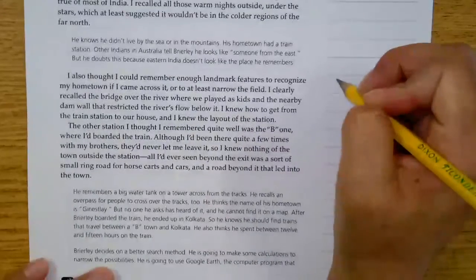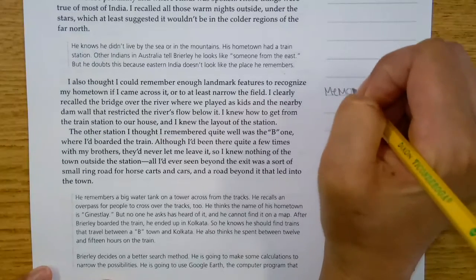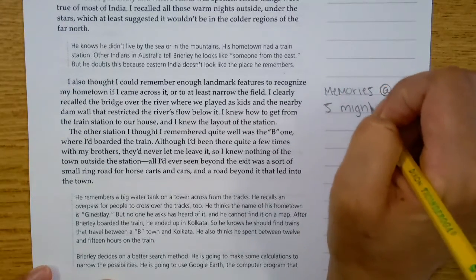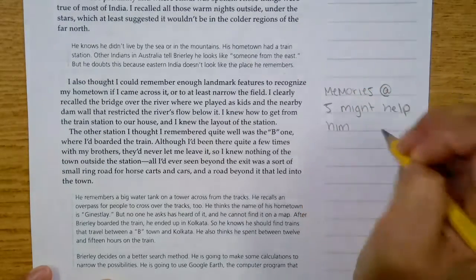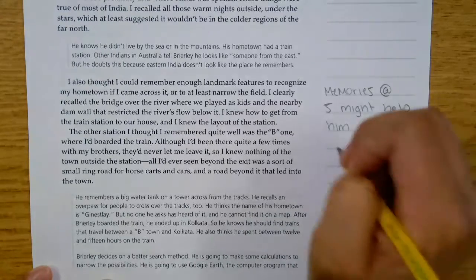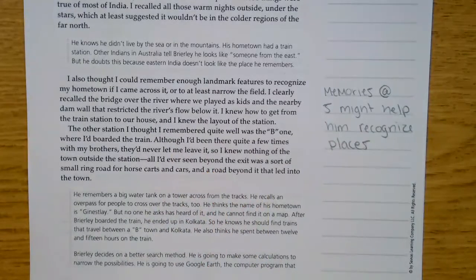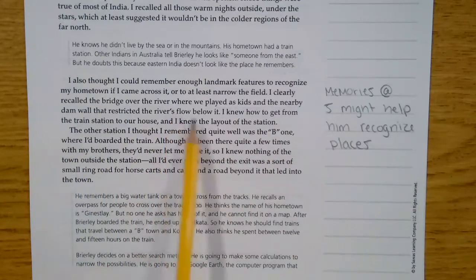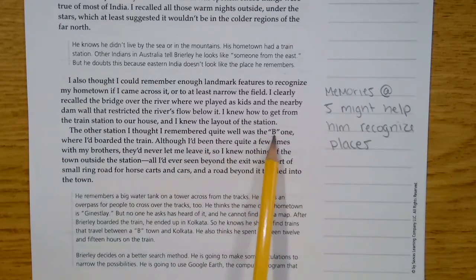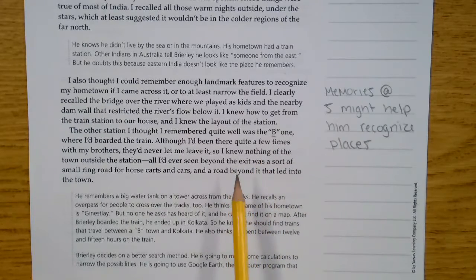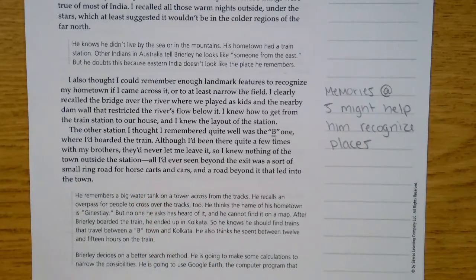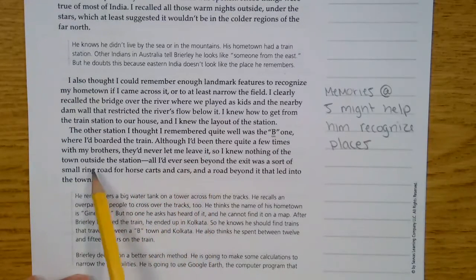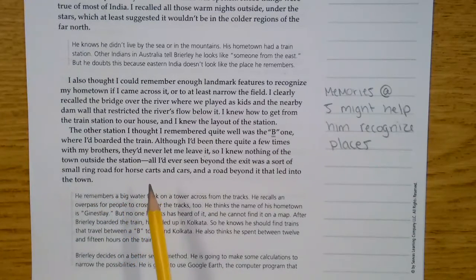So I'm just going to annotate off to the right. These are his memories. So he remembers some of the things where he played as a kid. He remembered that the dam kept the river from flowing below it. He remembers the train station, but he only remembers that it started with a B. And he never left town. So he really only knew everything in town and up to that train station. So he was not allowed to leave it. So he really doesn't know anything outside of that station in his town. That's all he knows and all he remembers.